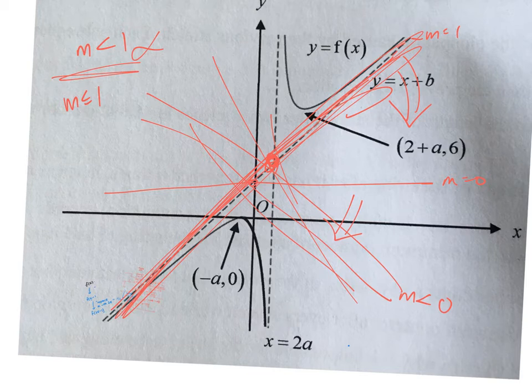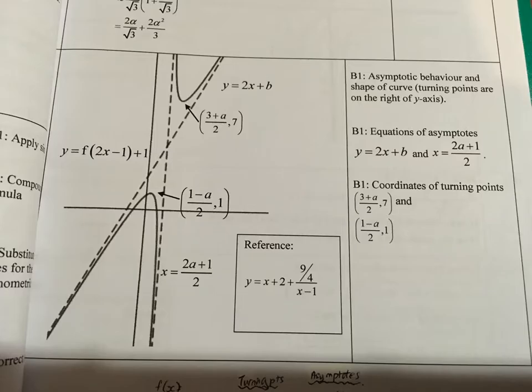This is for question 6. You actually obtain this as your final graph. After doing all the transformations you get 3 marks. The first mark is for asymptotic behavior and the shape of the curve — the shape of the curve must be correct.